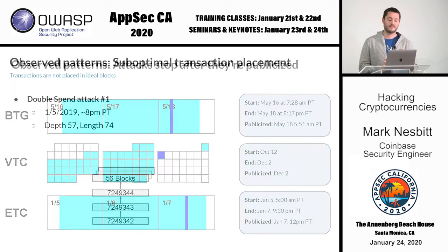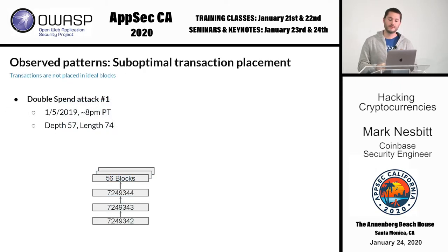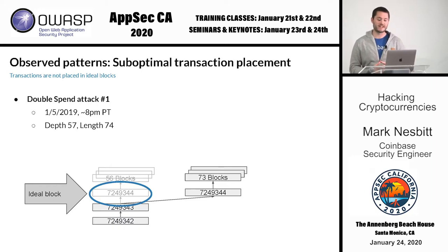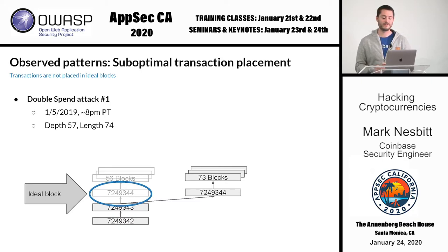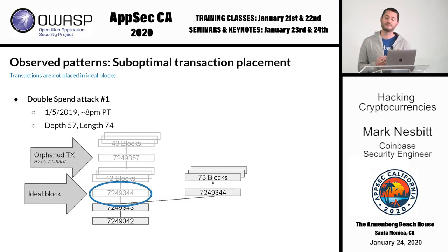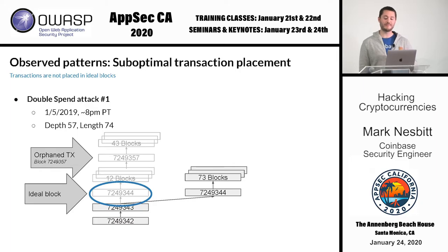The last observed pattern is suboptimal transaction placement. In the first Ethereum Classic double-spend attack, 74 blocks orphaned 57 blocks. The ideal block for the attacker to place transaction T is the deepest block orphaned, which would have given the transaction 57 confirmations — maximizing the chances the exchange would credit the transaction. But in this case, T was placed 13 blocks higher, where it only had 44 confirmations at the time of the attack. That means the attacker did the work required to orphan a transaction with 57 confirmations, but only for one that had 44. This happened in the vast majority of double-spends observed — transaction T was placed in a suboptimal block.